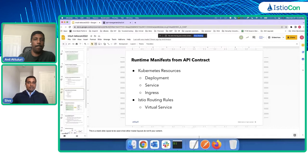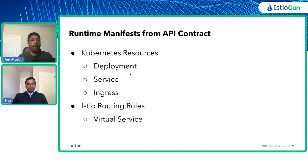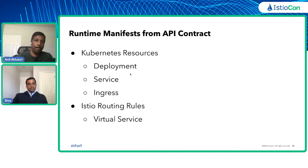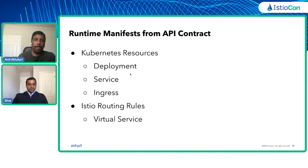As Anil explained, this framework provides a solution to create the runtime manifests for orchestration APIs at deployment time. The manifests for Kubernetes resources like deployment, service, and ingress would be generated, and these resources would be created in the target cluster where the API needs to be deployed. This framework also creates Istio routing rules — Istio virtual services — to enable routing of requests in the service mesh.